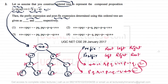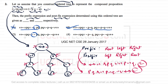Now let us see which option matches. Option A — the prefix is not matching, so option A is wrong. Option B — the prefix is matching, and checking the postfix: P, Q, negation of P, negation of Q, negation, 'or', then the double implication — yes, it is matching. So option number two is the correct answer. Options three and four are not matching, so they are wrong. The only correct answer is option number two. Now let us move on to question number three from the UGC NET 2017 Computer Science examination.